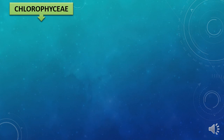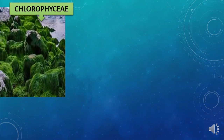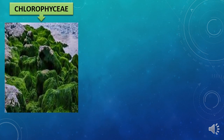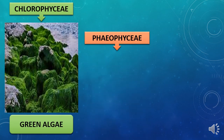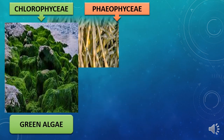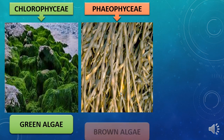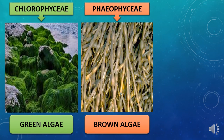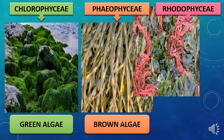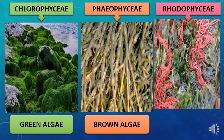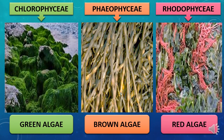These are the pictures of Chlorophyceae (green algae), Phaeophyceae (brown algae) and Rhodophyceae (red algae). With this, the Part 1 video is over. We will meet in the Part 2 video. Thank you, students.